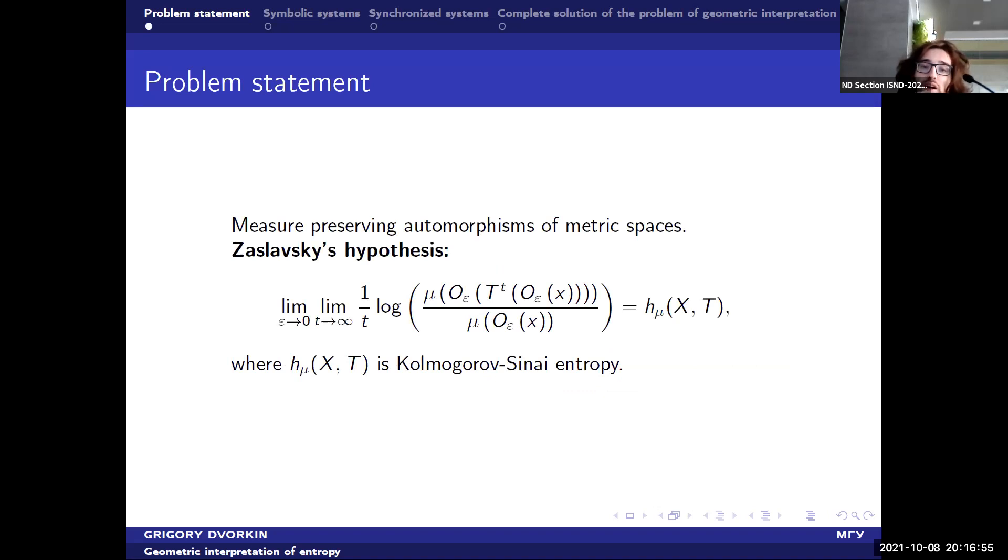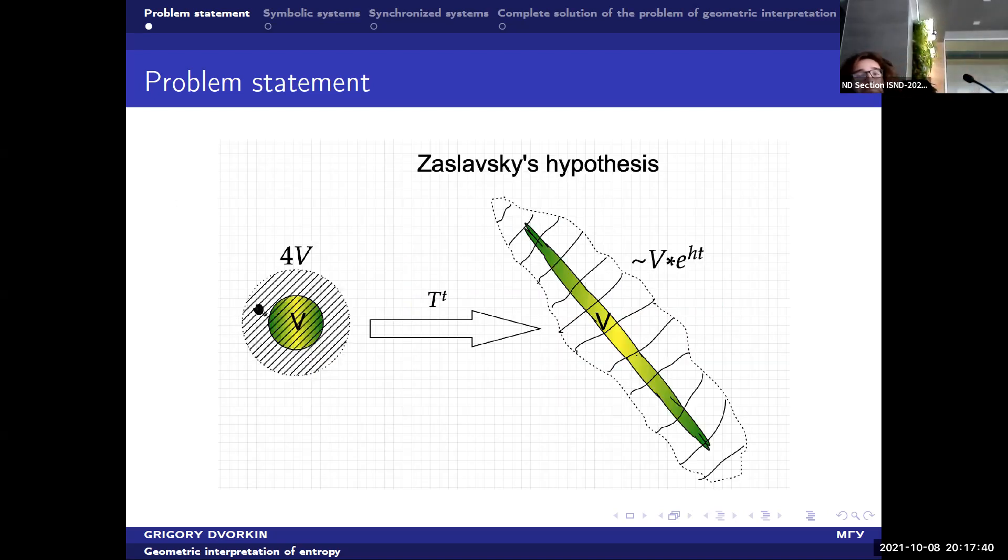So we are considering measure-preserving automorphisms of metric spaces. And I introduce Zaslavsky's hypothesis. Zaslavsky, he was a physicist, and he introduced such very big and sophisticated hypothesis. I don't think you naturally understand what it is about, so I have a picture that will explain what does that mean.